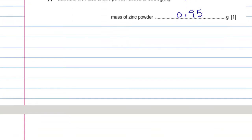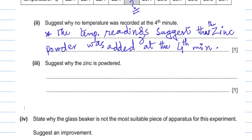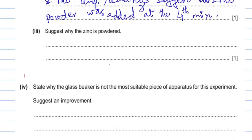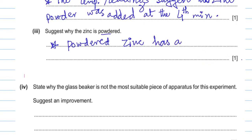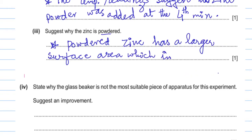The next part asks why zinc is in powdered form. Obviously, it is to increase the rate of reaction. Powdered zinc has a larger surface area, which increases the rate of reaction.